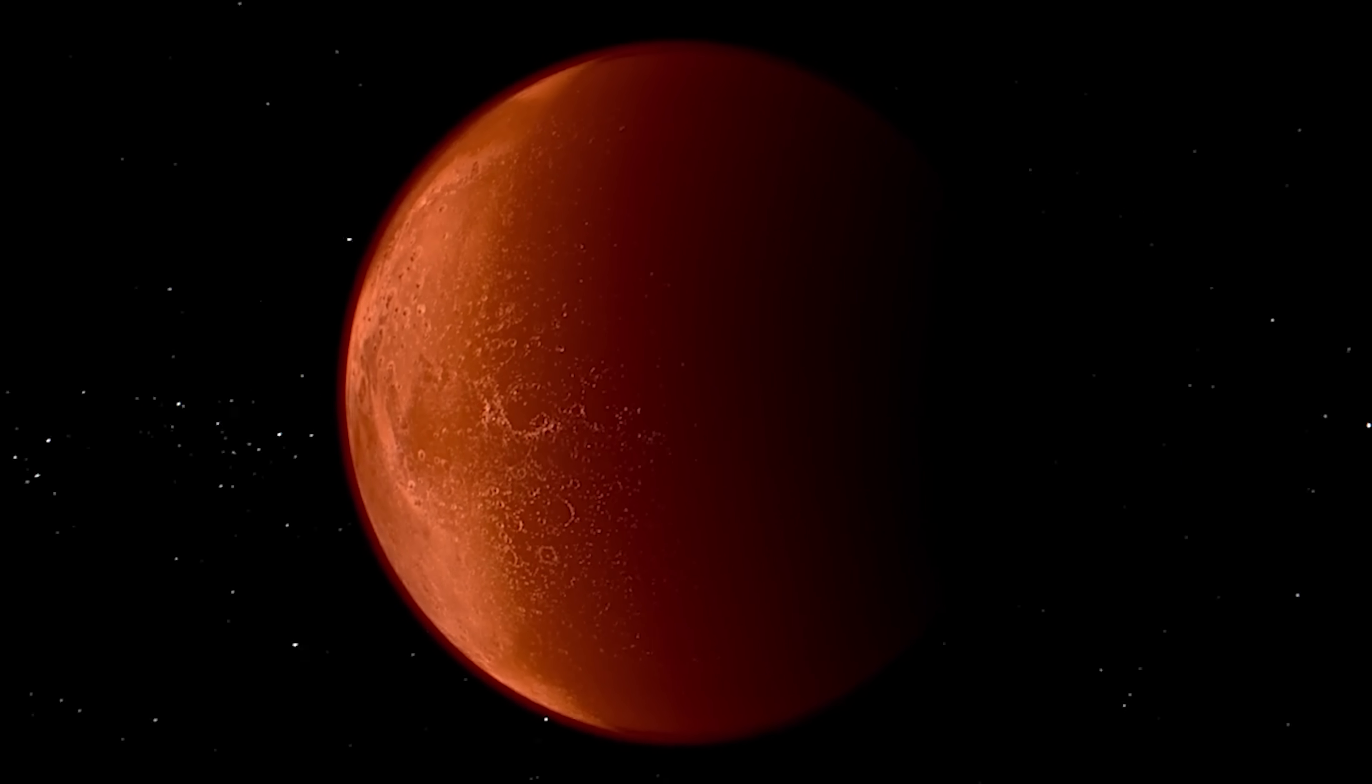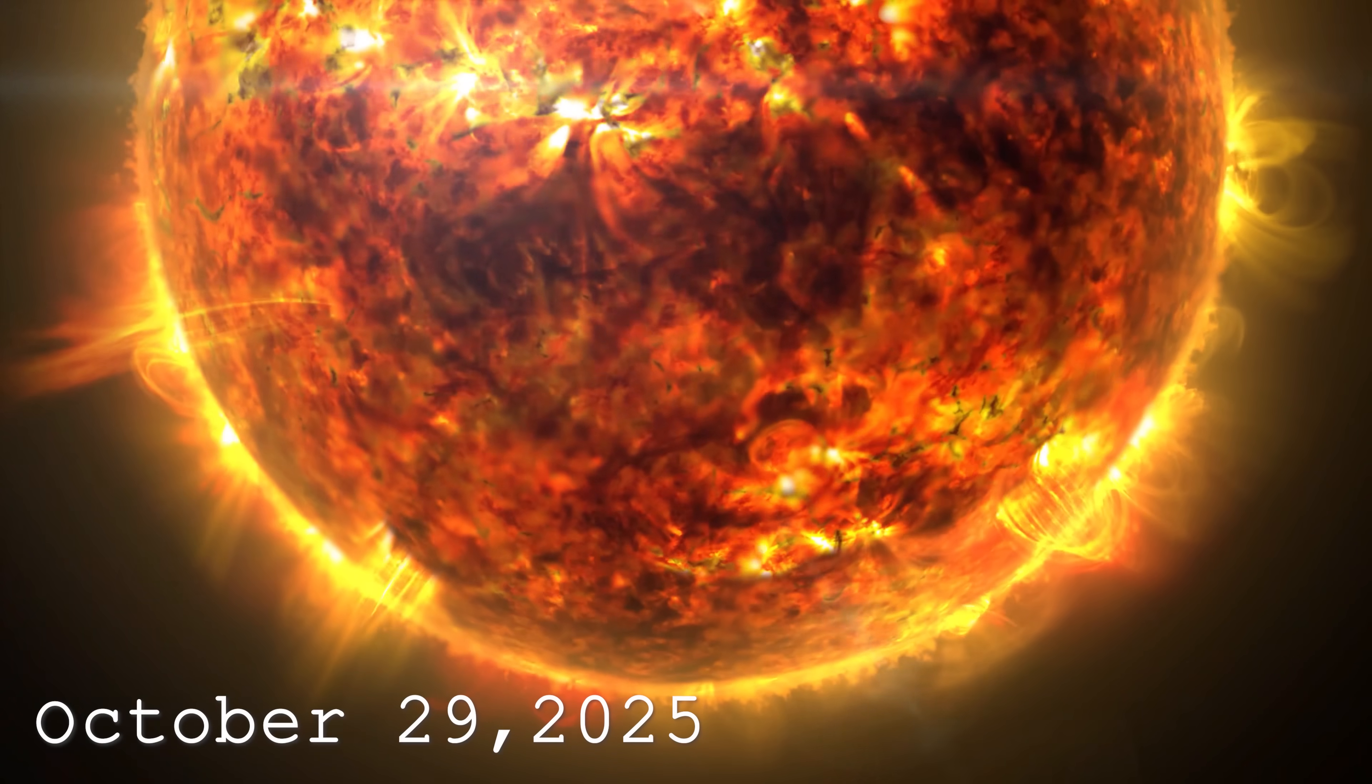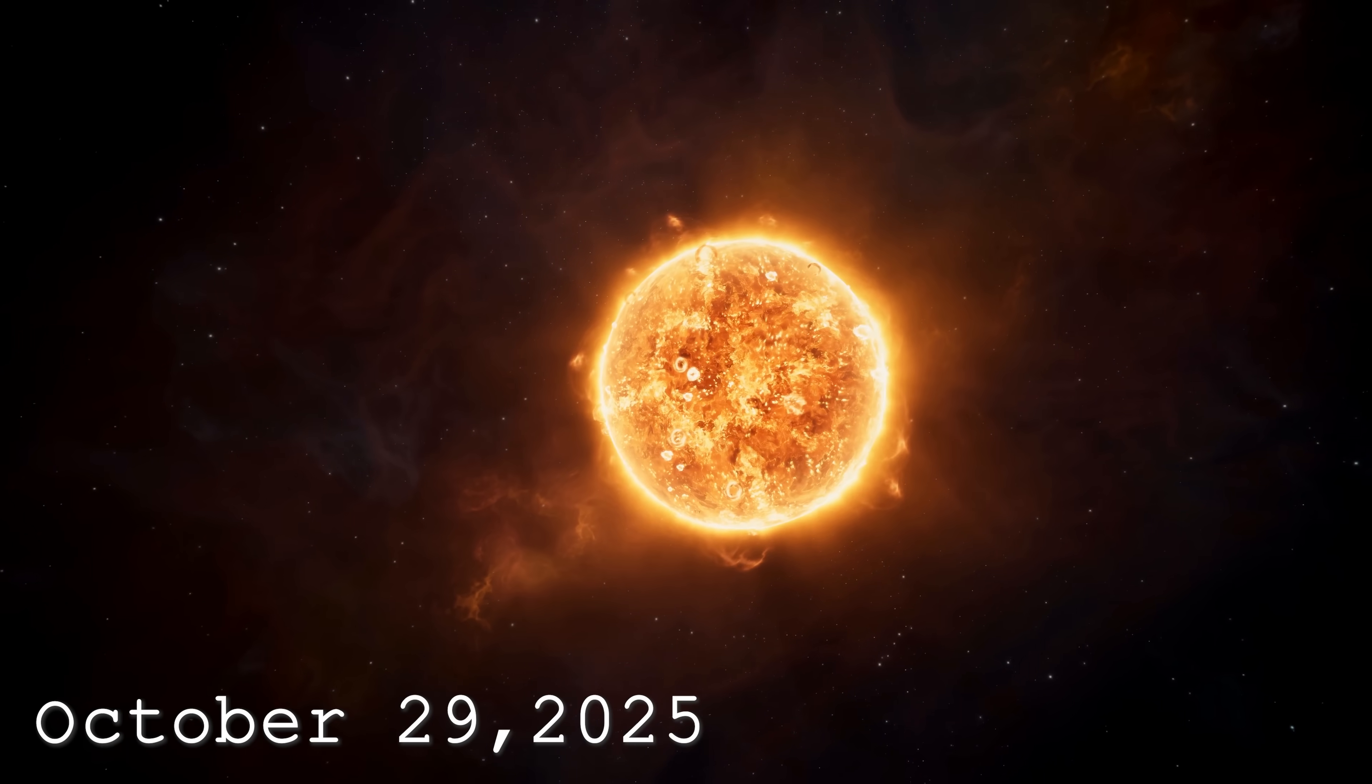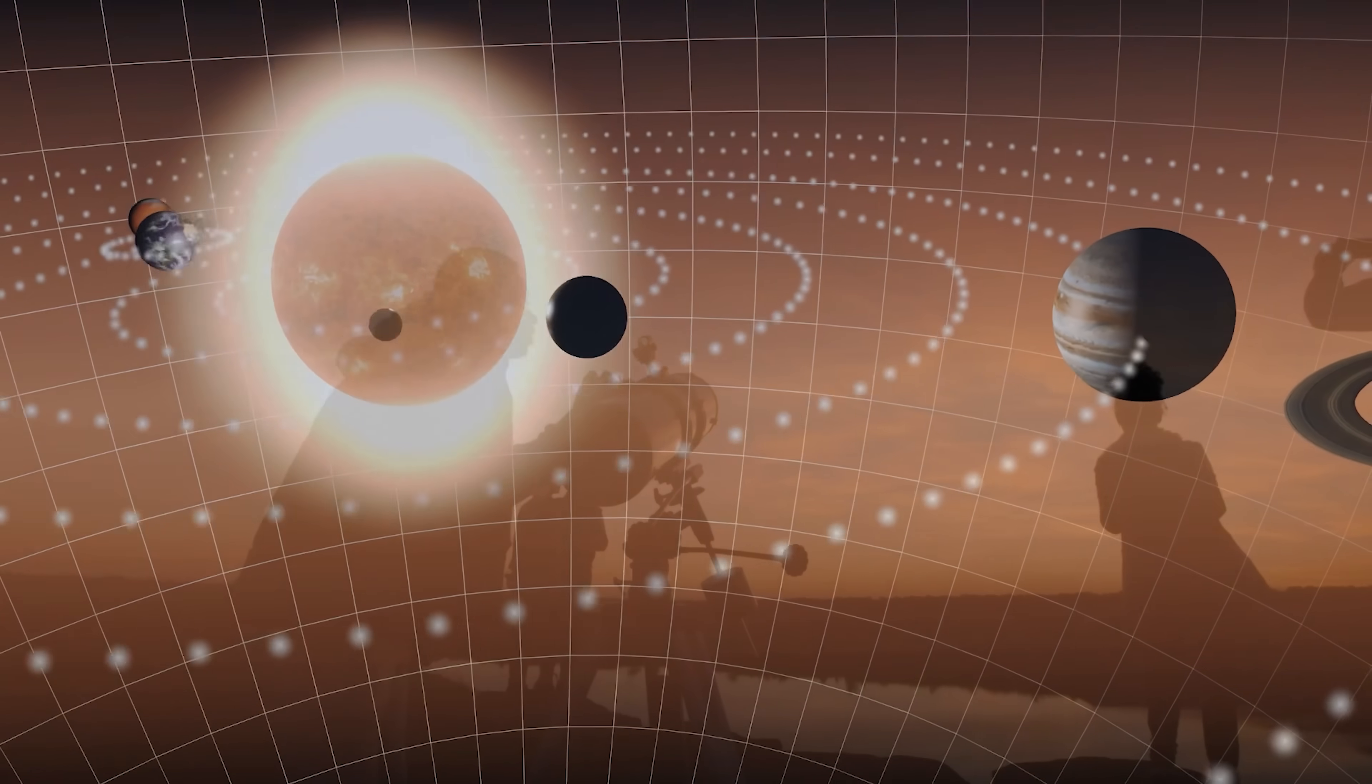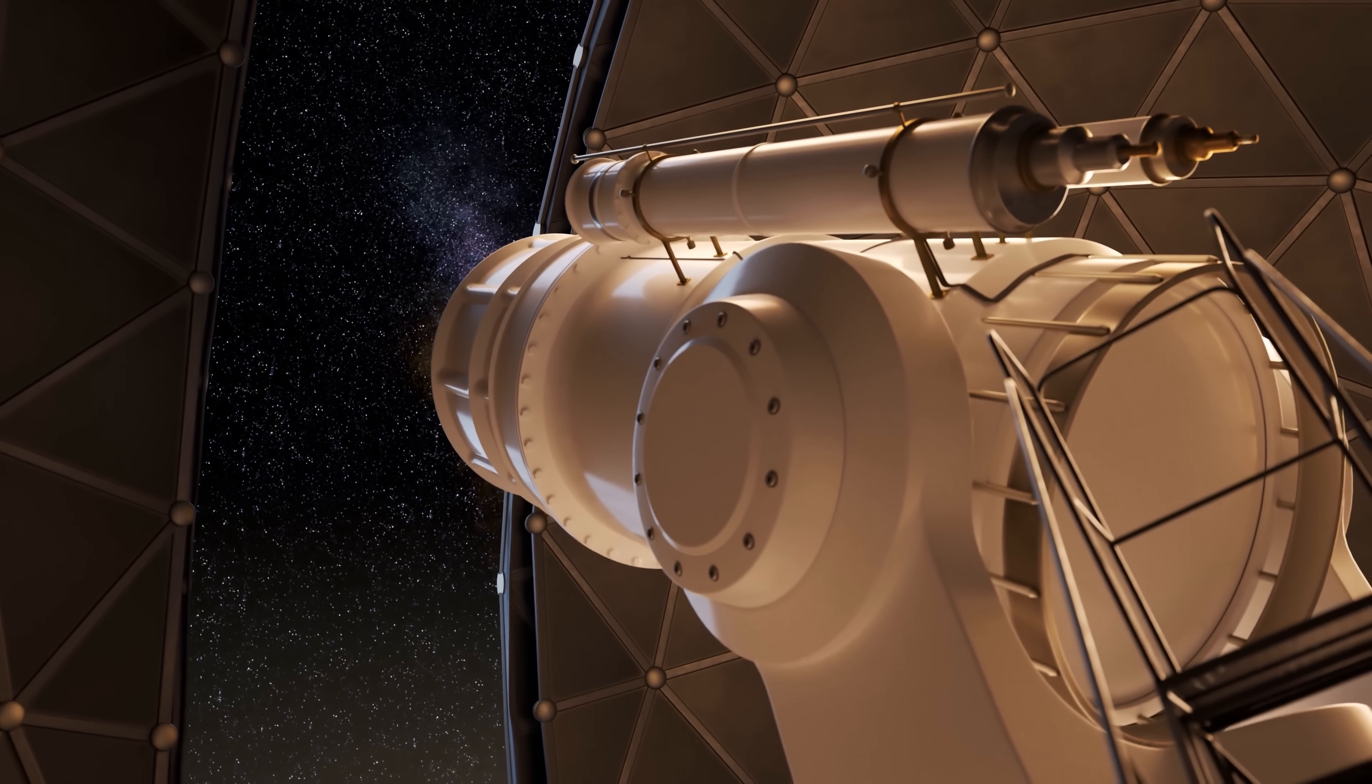According to orbital calculations, on October 3, 2025, 3I Atlas will have its first planetary encounter with Mars. And less than a month later, on October 29, 2025, it will reach perihelion, the closest point to the Sun in its trajectory. But the most remarkable feature lies in a rare cosmic alignment. The Sun, Earth, and 3I Atlas will form a perfect straight line, with the Sun right in the middle. At that exact moment, the Sun will completely obscure our view, making observations of this object nearly impossible.